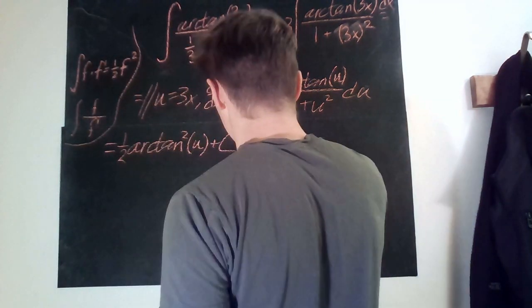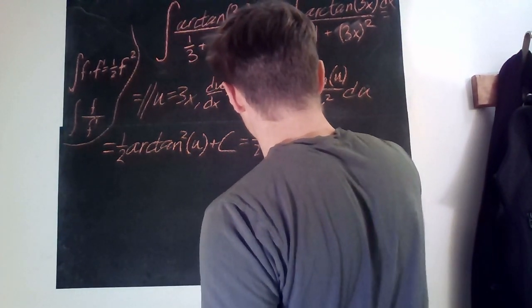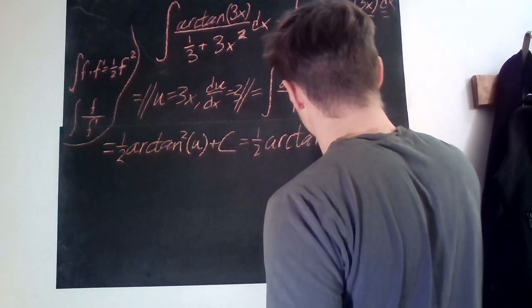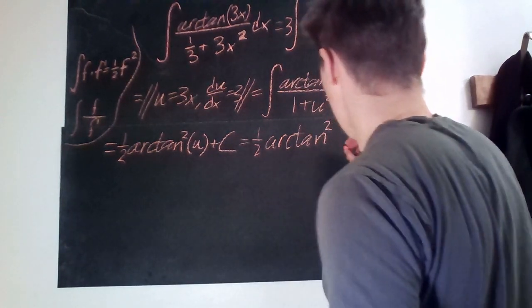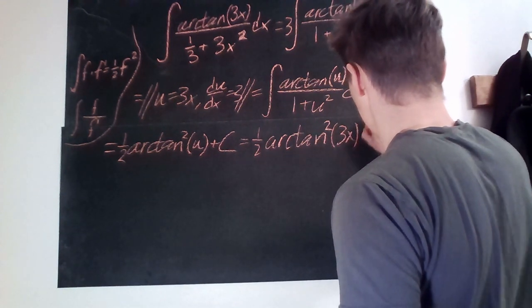And what is this? We obviously have to substitute back. So it's 1 half arctan squared of 3x plus c.